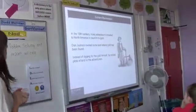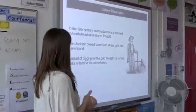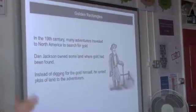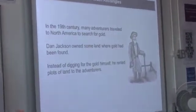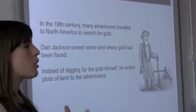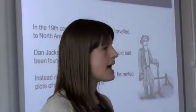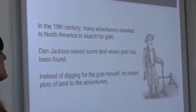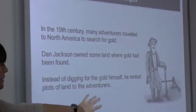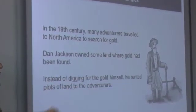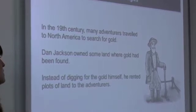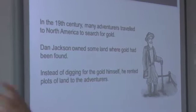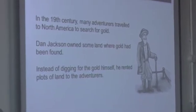I'm going to have a little bit of a history lesson. In the 19th century, many adventurers used to travel to North America in search for gold. Dan Jackson owned some land where gold had been found, so he owns the land in North America where this gold is going to be. But instead of digging for the gold himself, he decided he was going to rent out plots of his land to adventurers who would then be the ones that dig for gold. So he was going to get money by renting out his land.